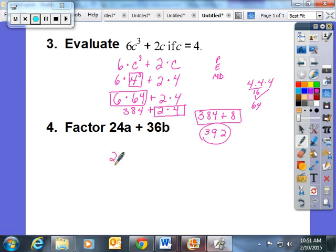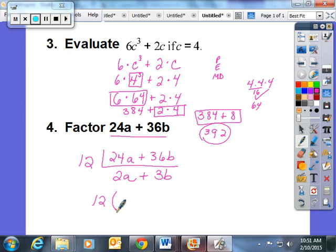The last one tells me to factor 24a + 36b. I'm going to look at the coefficients and see if they have anything in common. They both have a factor of 12 that I could pull out. 24a divided by 12 is going to give me 2a. 36b divided by 12 is going to give me 3b. If I was going to factor this two-term expression, the correct answer would be 12 times the quantity 2a plus 3b.